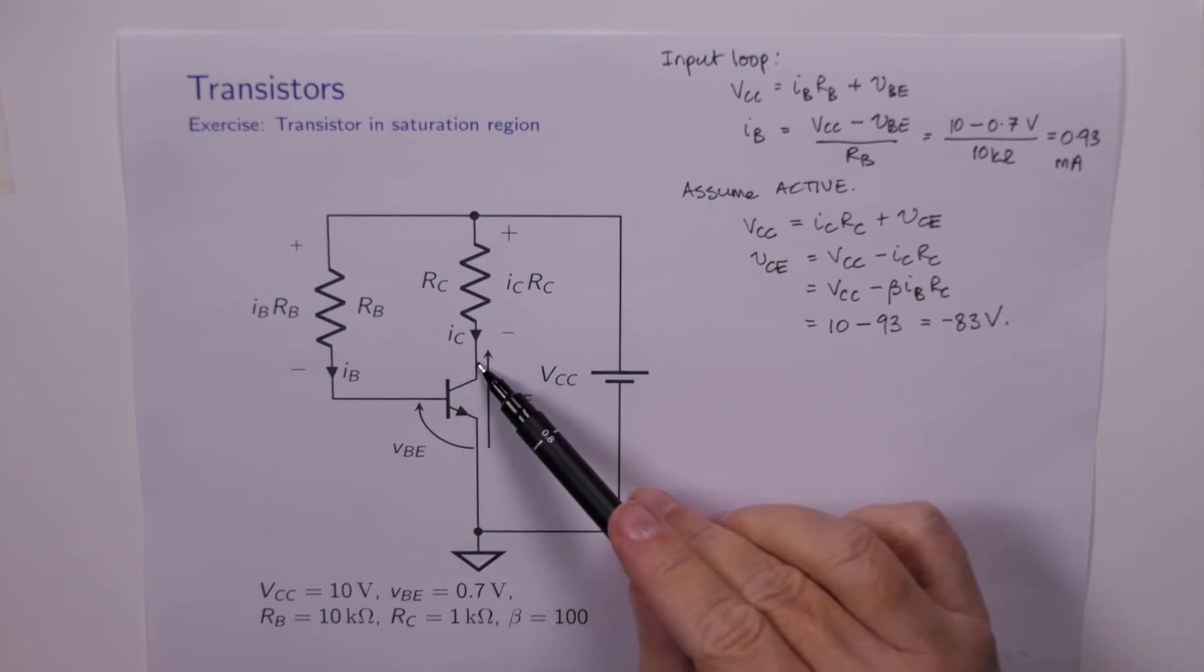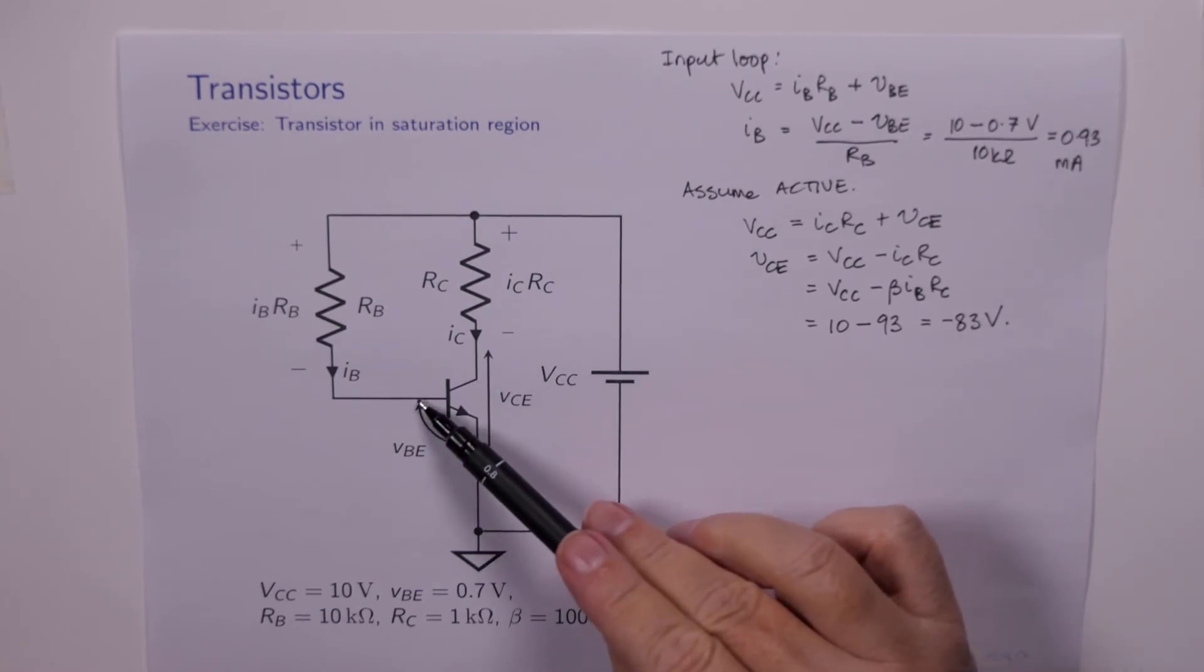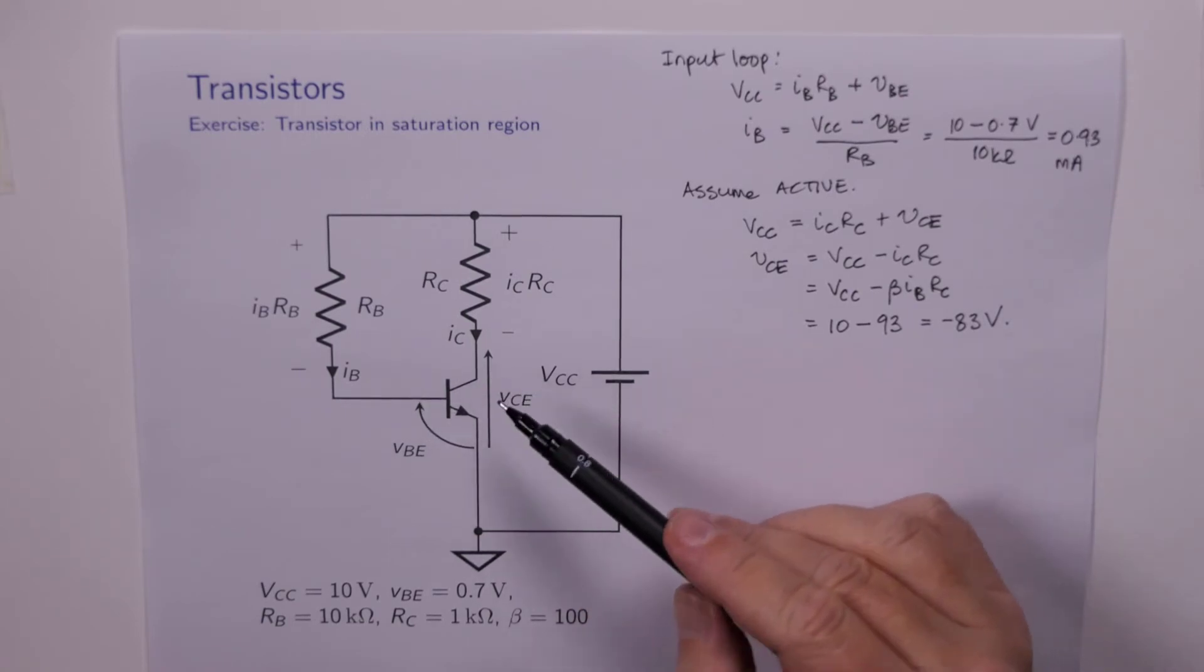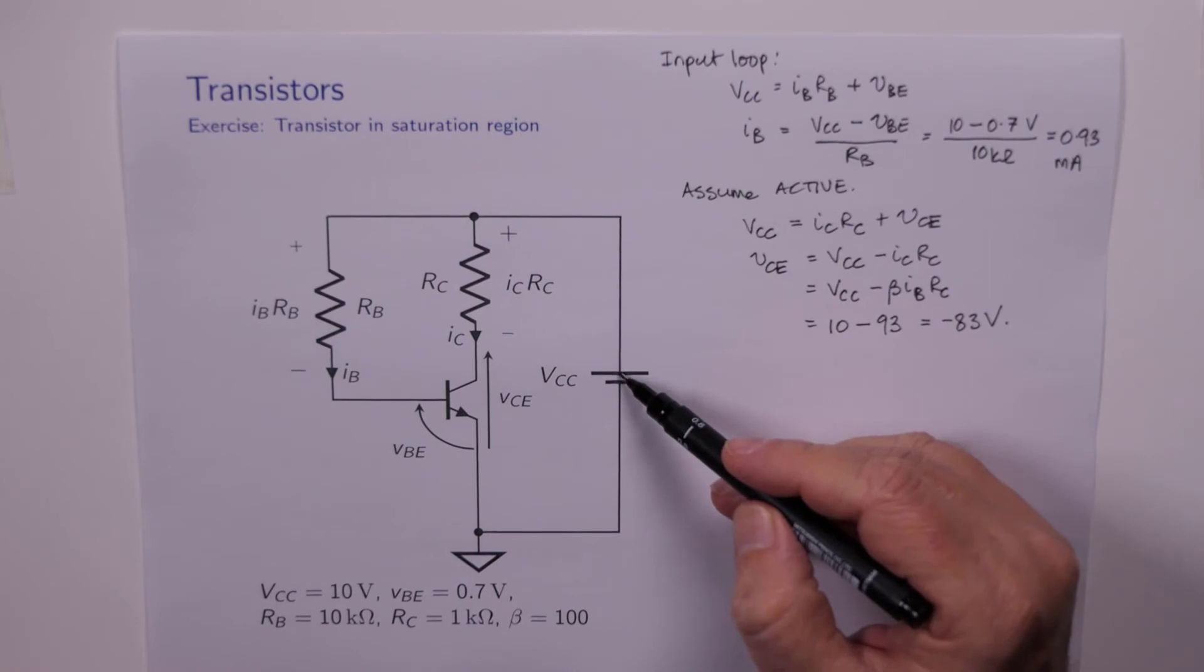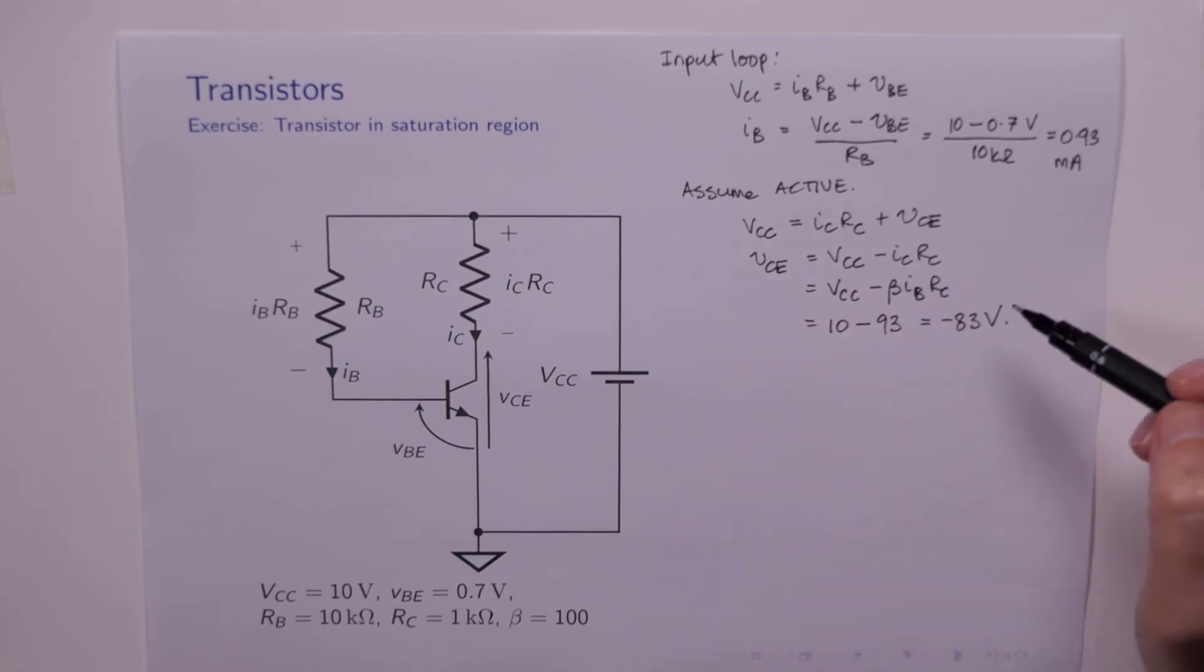Well, if that's minus 83 volts and VB is 0.7 then VBC is definitely negative. That's one of the requirements for being in the active region. VBC must be less than 0. But we've only got a 10 volt voltage source. So how on earth can we get minus 83 volts?